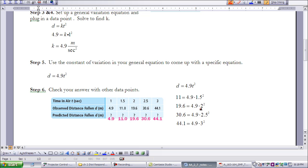If I get 2 in place of t, I get 19.6. 2.5, I get 30.6. And 3, I get 44.1. So what that means is that the model that we have come up with for our data matches our data very nicely.